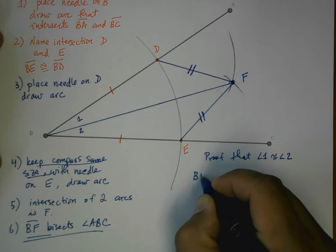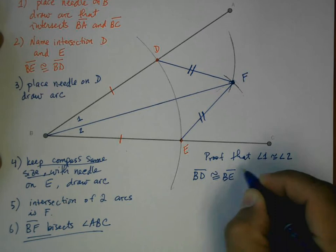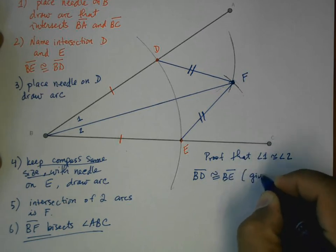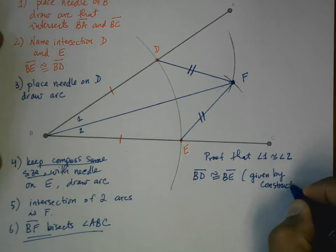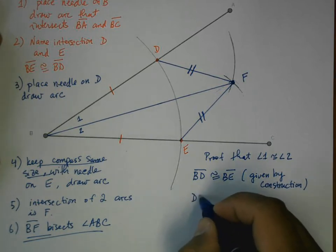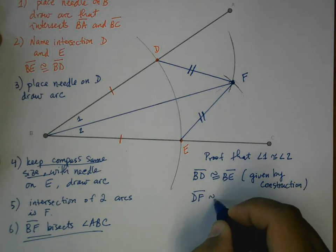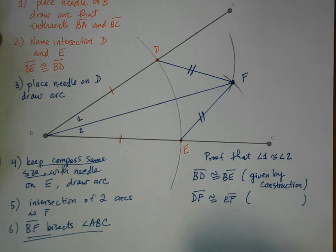The first thing that I'm going to say is that BD is congruent to BE, and this is given by construction. In other words, we made it that way. We use a compass and straight edge to make it that way. Next, DF is congruent to EF for the exact same reason as above. It's given by construction. We made it that way.